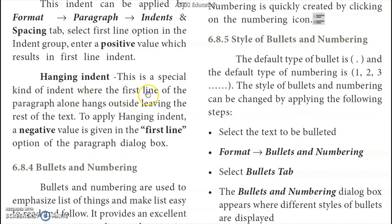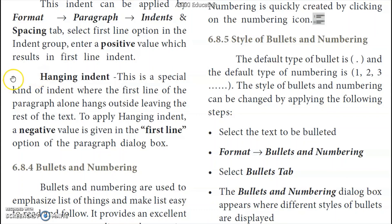Hanging Indent is a special kind of indent where the first line of a paragraph alone hangs outside, leaving the rest of the text indented. If we apply a hanging indent, the first line of the paragraph starts at the left margin while the remaining lines are indented. This is a normal indent example. That covers the indentation types.